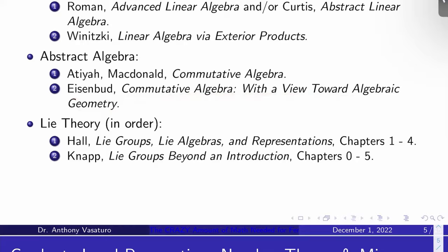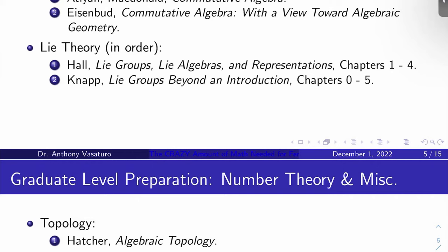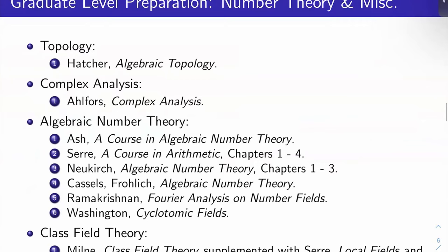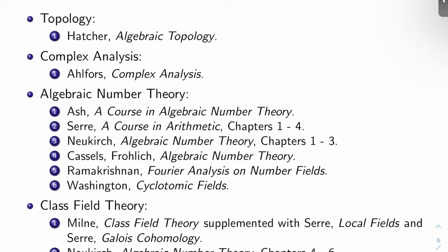Lie Theory. You're going to want to know some basic Lie theory, especially if you want to get hardcore into the representation theory stuff and into Langlands program. I like Hall, Lie Groups, Lie Algebras, and Representations, the first four chapters, and Knapp's Lie Groups Beyond an Introduction, chapters 0 through 5. Topology: you're going to need to know your algebraic topology at various points, especially if you want to understand some of the intuition developed in algebraic geometry, like the étale fundamental group, for example. I like Hatcher's Algebraic Topology for that. Complex analysis: you're going to need to know complex analysis to study modular forms. Ahlfors's Complex Analysis is the place to go for that.